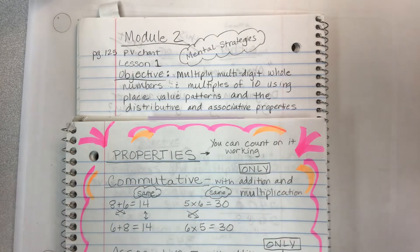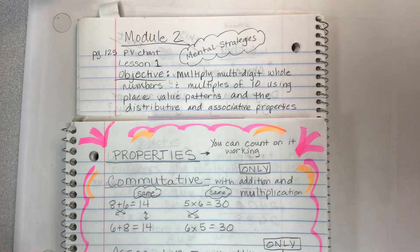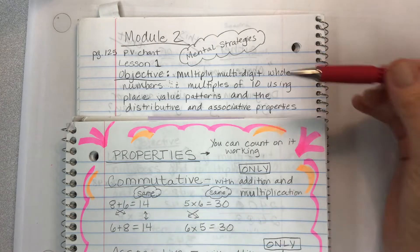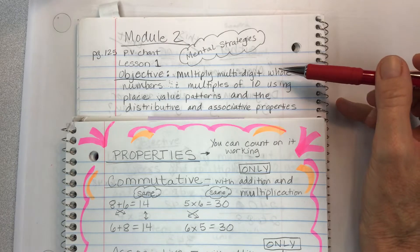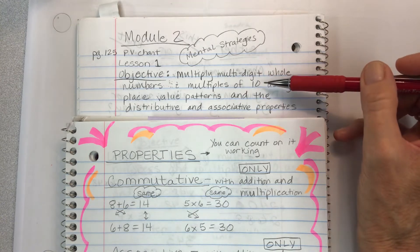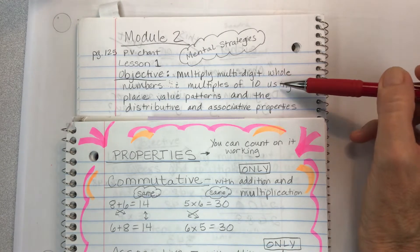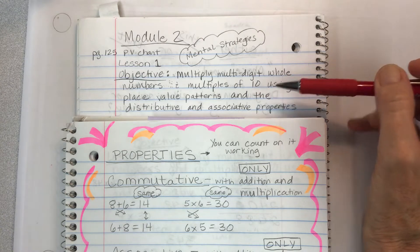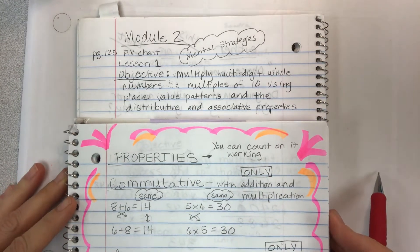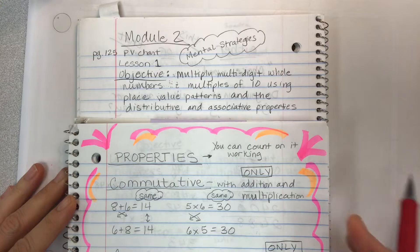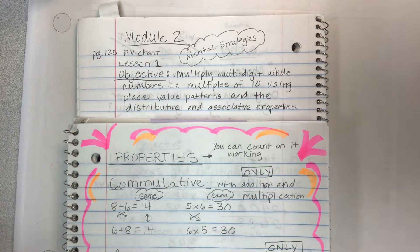The objective here is almost like we're starting module 1 in the beginning over again. We're multiplying multi-digit whole numbers just like we did before — using multiples of 10 and place value patterns — and now we're going to be talking about new properties to help us with our whole numbers.